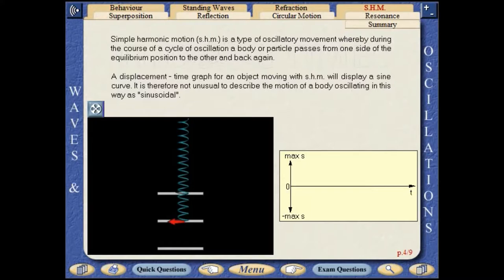Simple harmonic motion is a type of oscillatory movement whereby, during the course of a cycle of oscillation, a body or particle passes from one side of the equilibrium position to the other and back again.